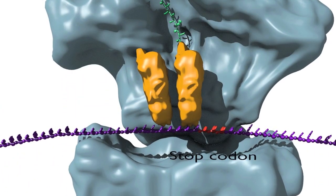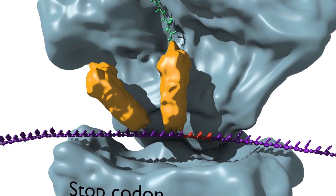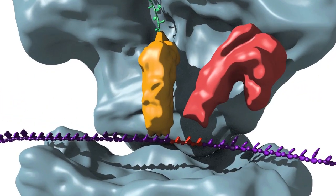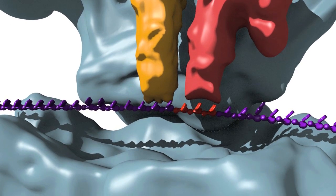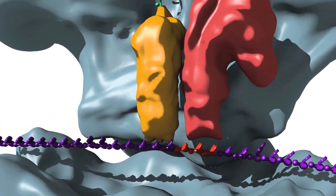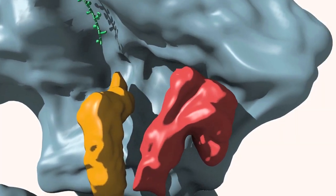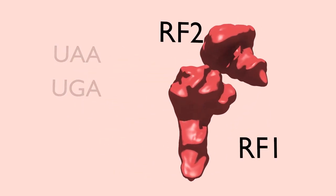Stop codons are recognized by protein factors known as release factors that function in an analogous manner to tRNA. One end of the release factor recognizes stop codons positioned in the A site with high specificity, and the other end facilitates chemistry in the active site of a large subunit. In bacteria, there are two release factors, RF1 and RF2, that recognize the three stop codons—UAA, UGA and UAG—with overlapping specificity.